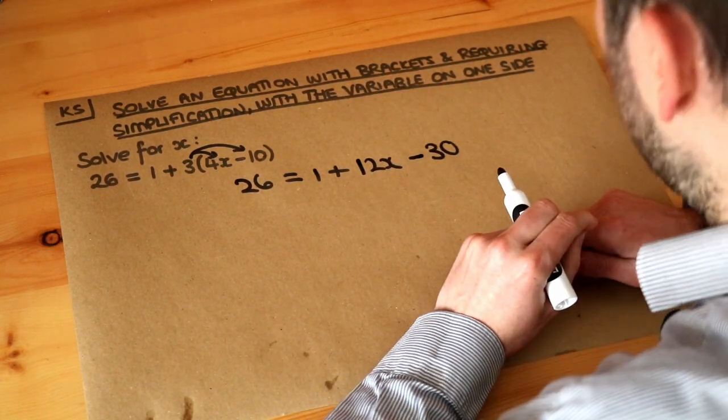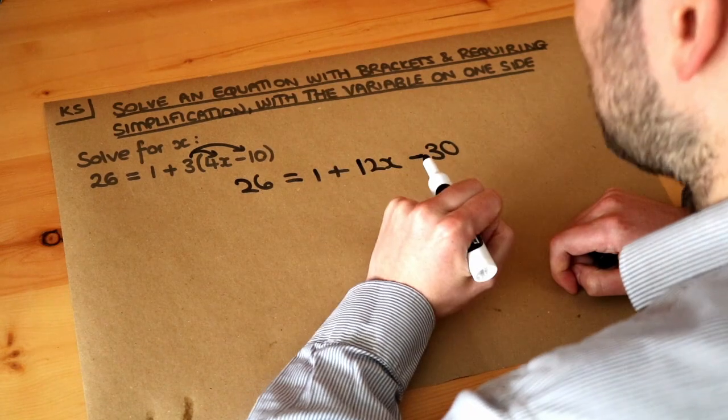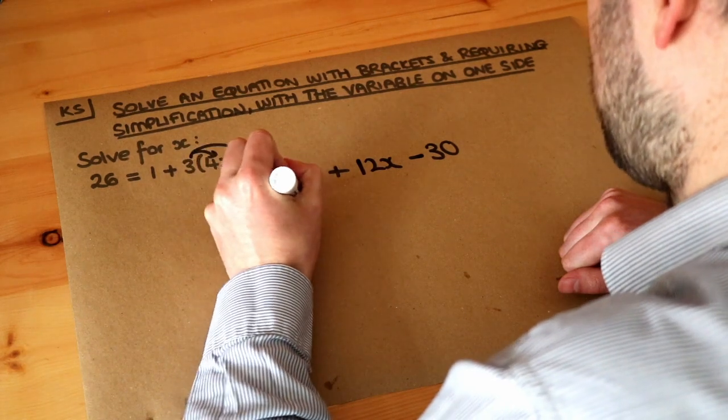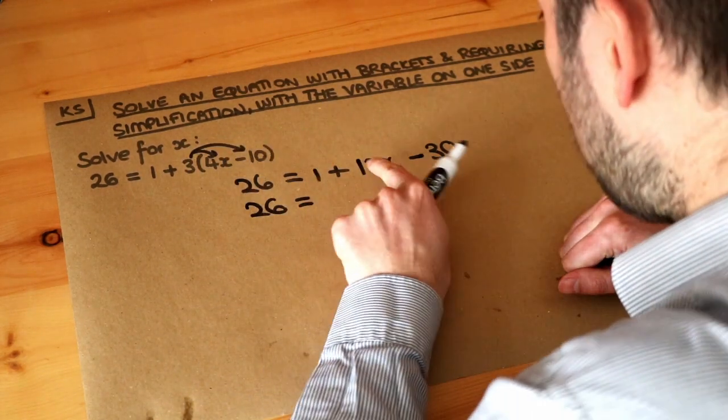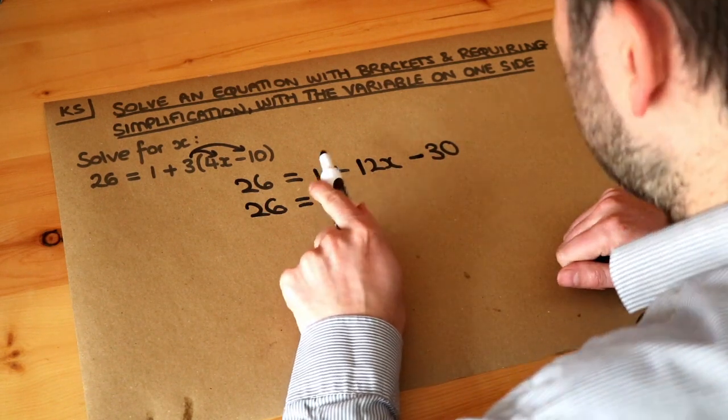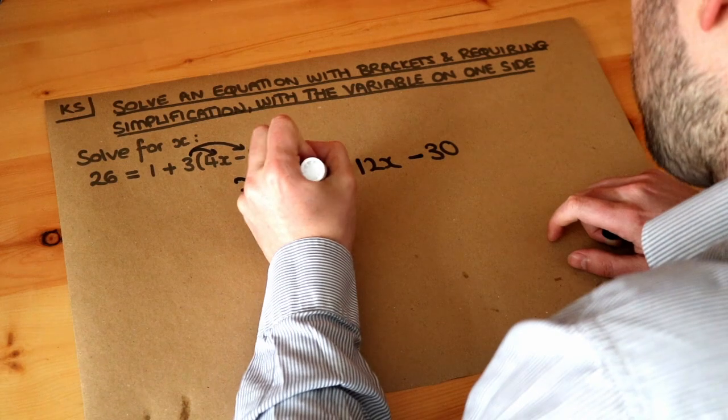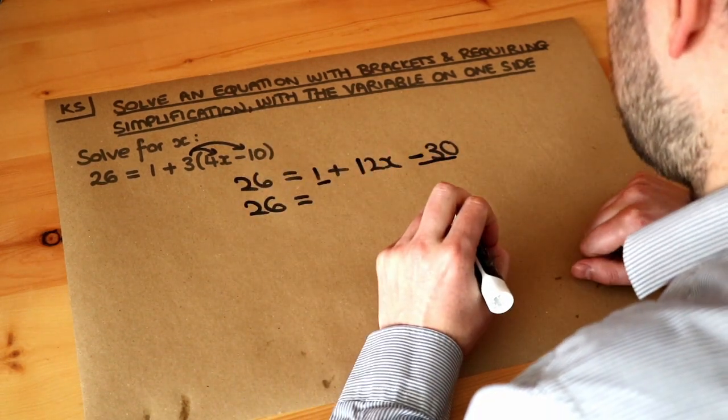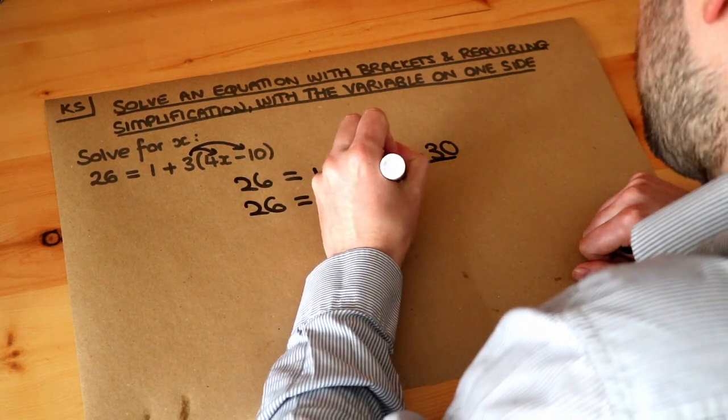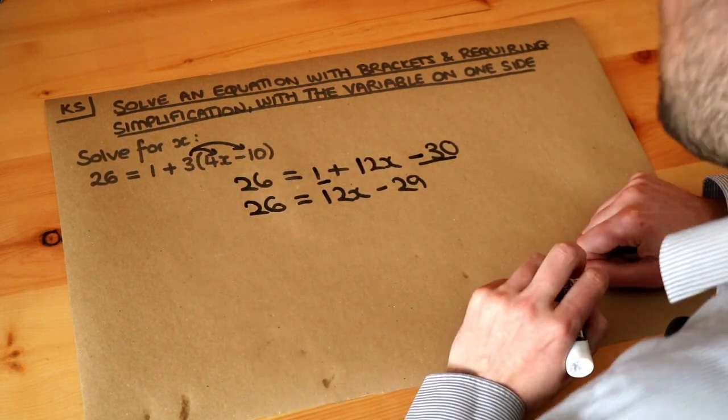So now we've got a slightly simpler equation which doesn't have brackets in it, and it also says that we probably require simplification. So always tidy up your equation where you can by collecting like terms. Now on the left-hand side we've just got 26 and there's nothing we can do there, but can you see on the right-hand side where we've got an x term, the 12x, which we'll just leave be, but we've got two constant terms. Constant terms are terms which don't have an x or a variable in them. So we've got 1 minus 30, 1 minus 30 is negative 29. So we could put the 12x first if we want, and then we've got minus 29. You could have also written minus 29 plus 12x and that would have been absolutely fine.